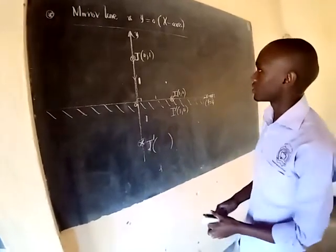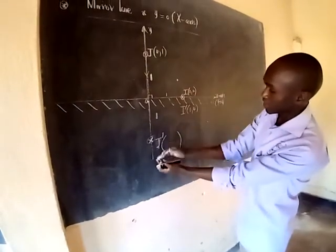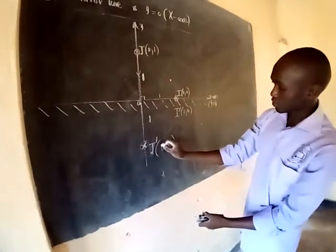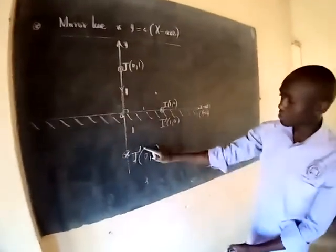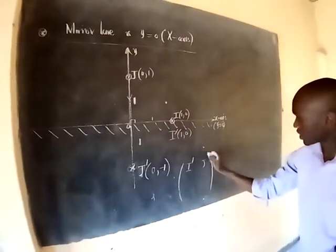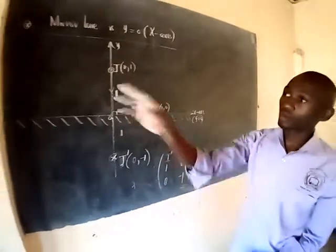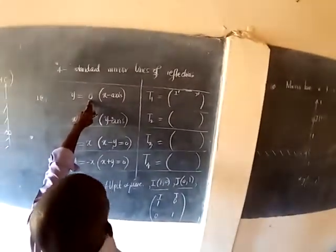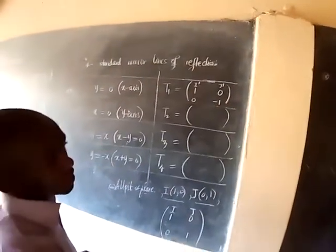J has been on the positive side of the y-axis, and J prime is on the negative side of the y-axis but still on the axis, so this will be 0 for the x-coordinate, but on the negative side meaning this is negative 1. So the matrix of reflection — formed by I prime and J prime — for the line y equal to 0 will be I prime which is 1, 0 and J prime which is 0, negative 1, giving the matrix: 1, 0, 0, negative 1.